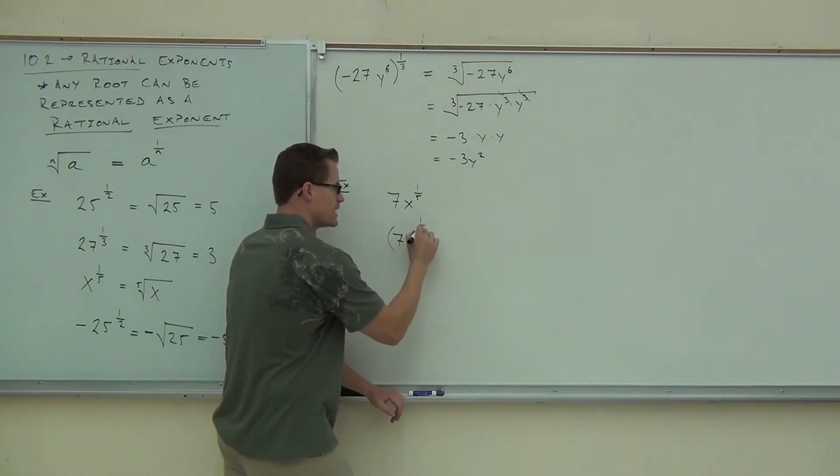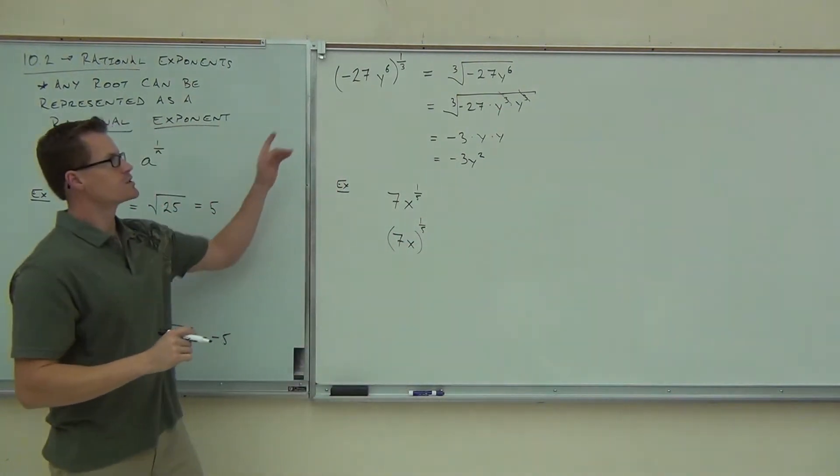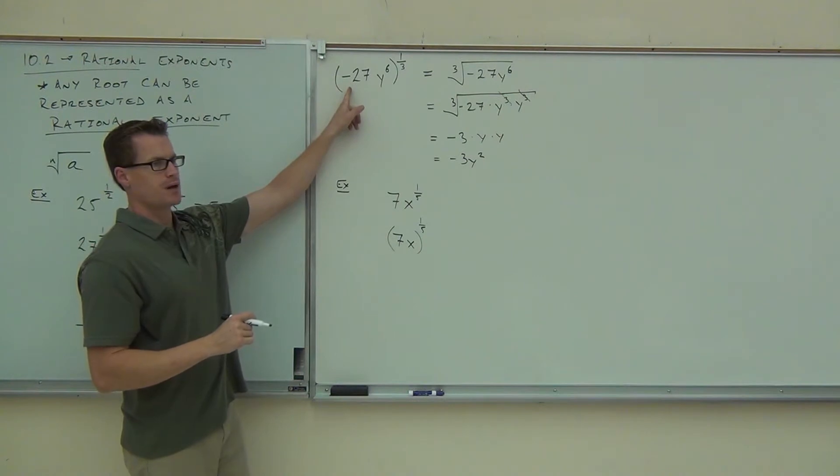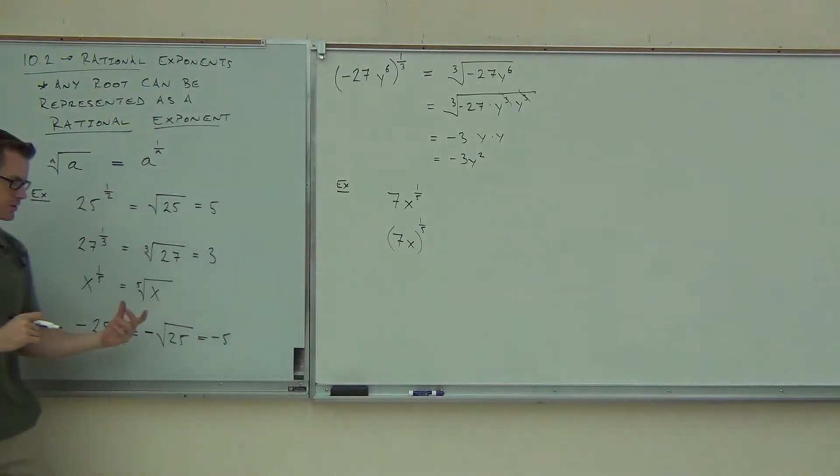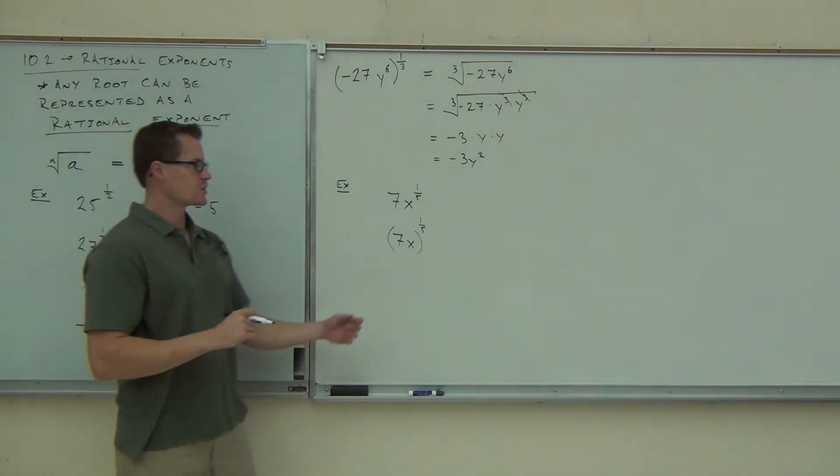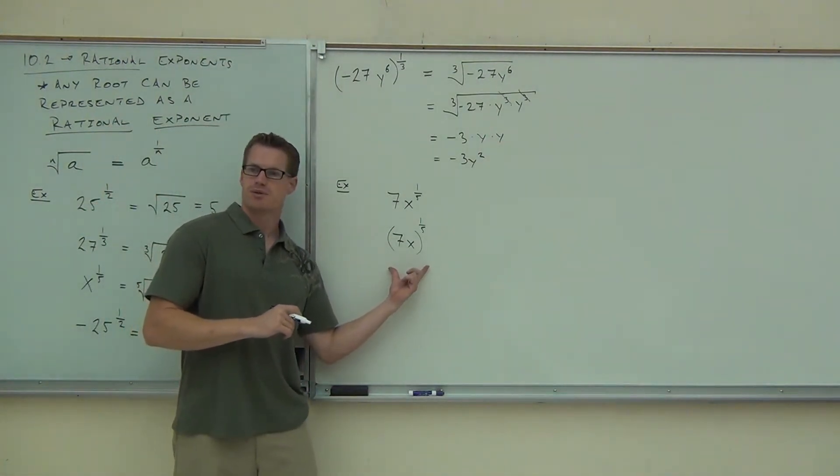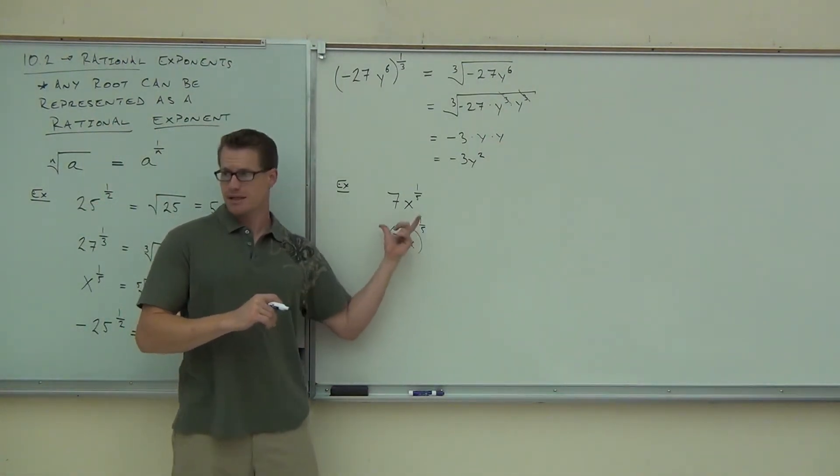Very similar to this negative idea. Notice how if I want to include the negative, I've got to have a parenthesis. If I don't want to include the negative, I don't have parenthesis. If I want to include the number, I've got to have parenthesis. If I don't, then I don't.